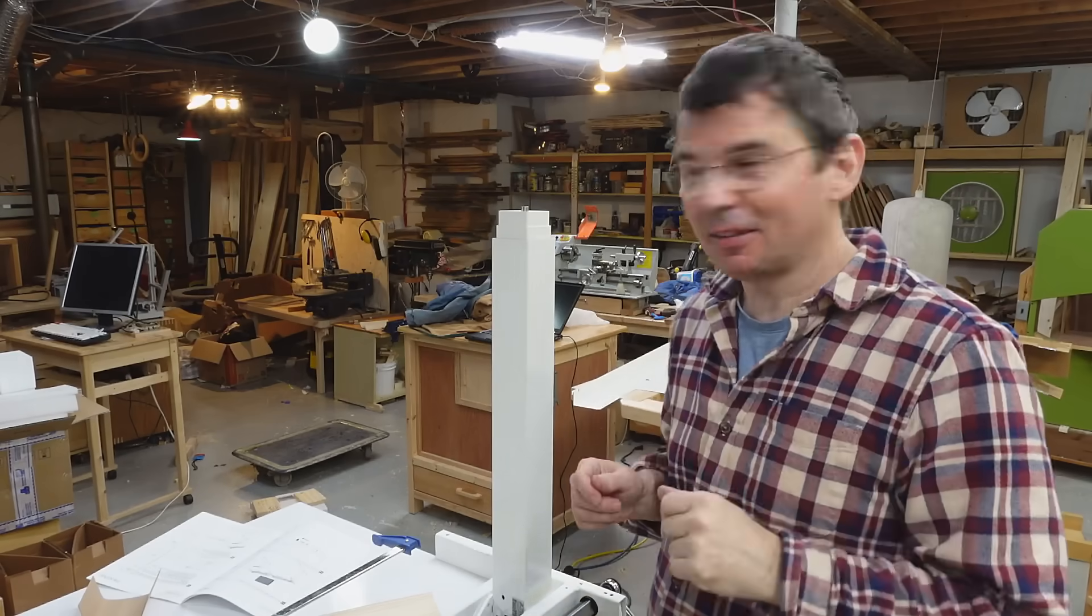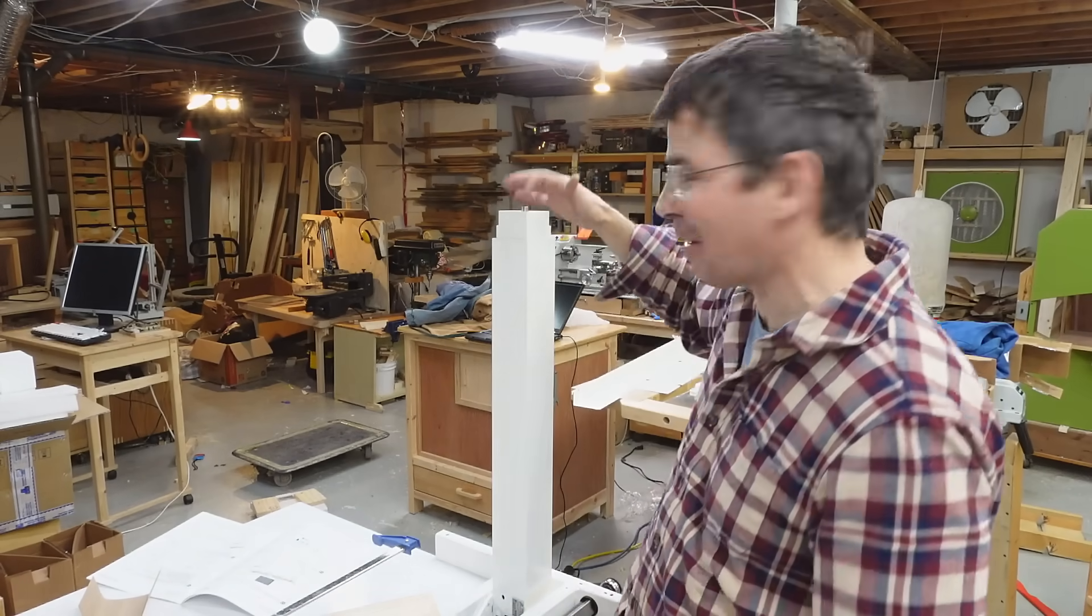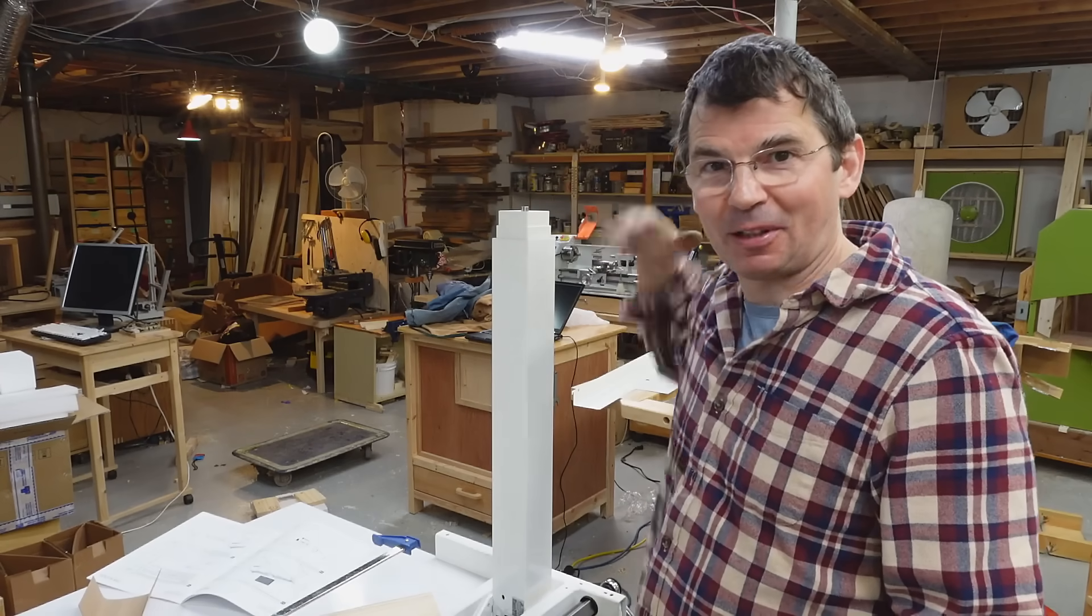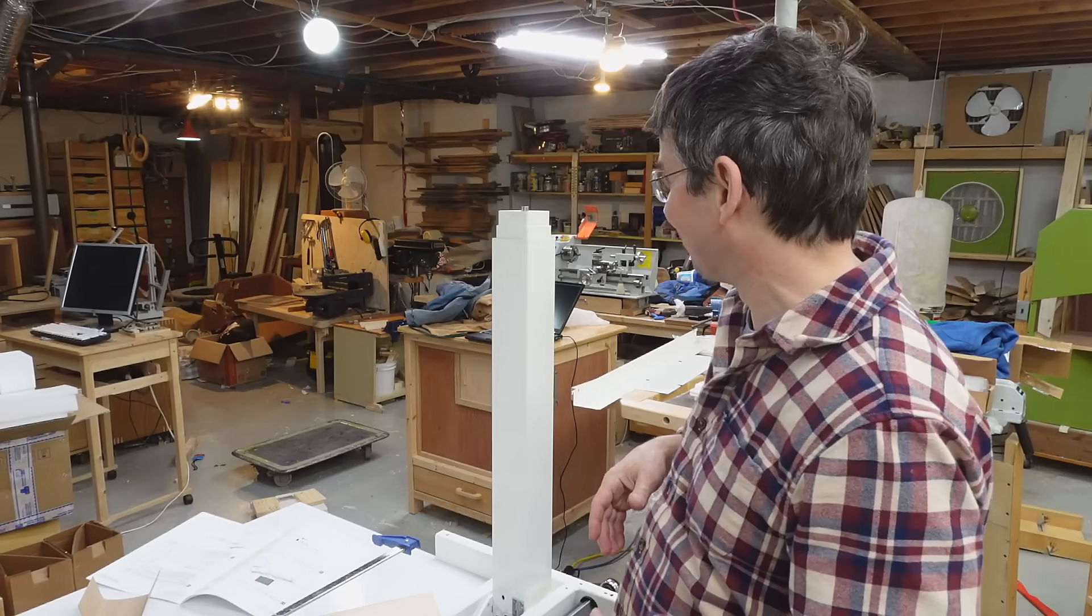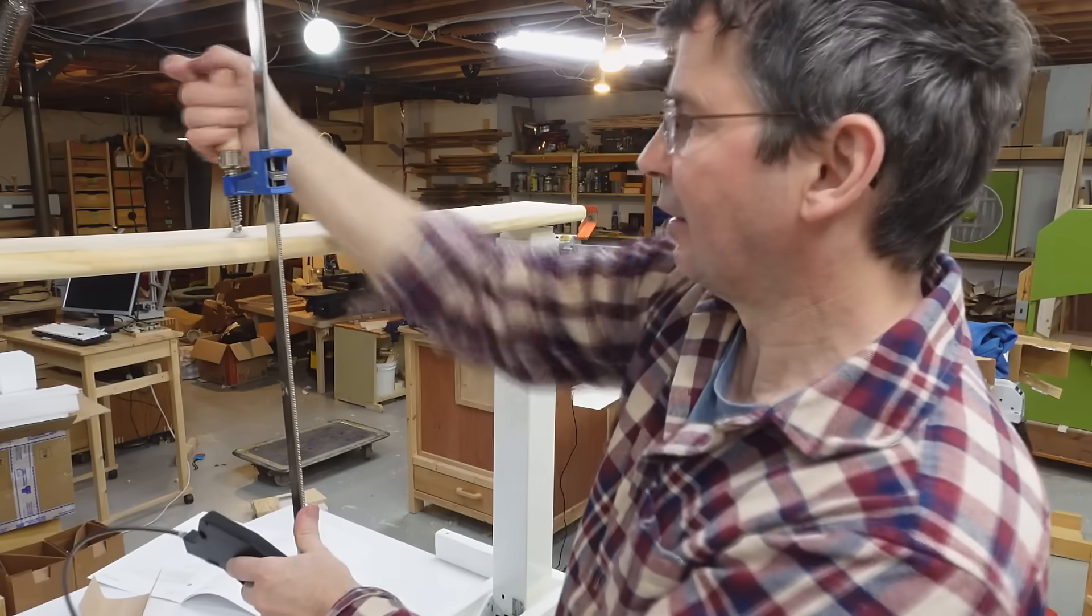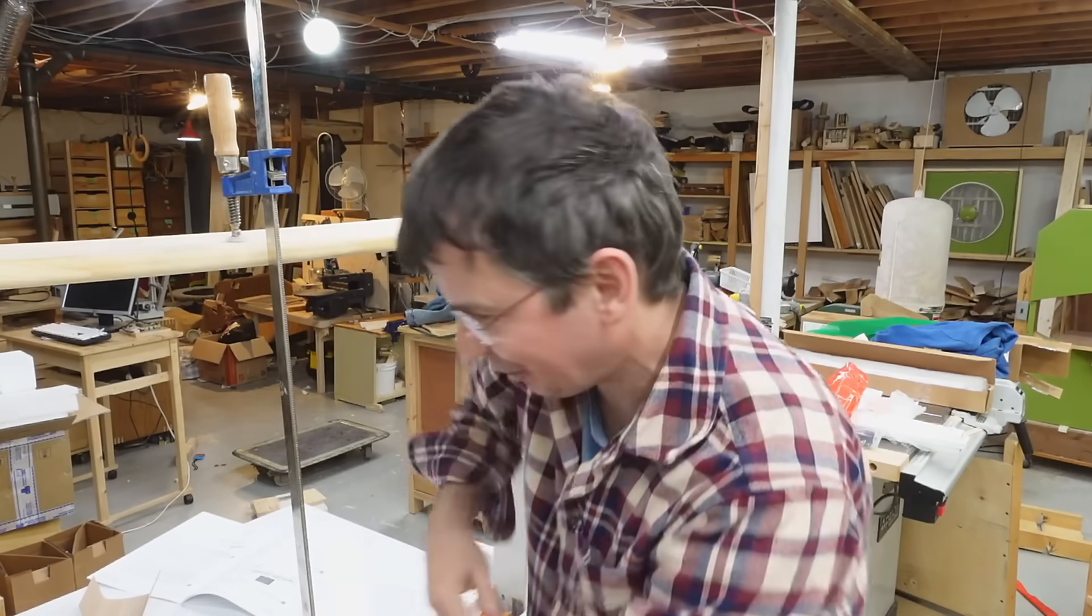Now the safe thing to do would be to push these all the way in again so I can put the safety pins in there so I can safely put the horizontal parts on these legs. But how to do that with the desk upside down? Okay. Now I can put the safeties back in.